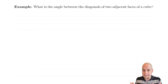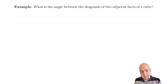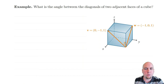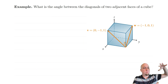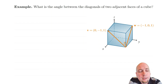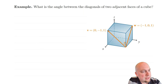Let's do another example in three dimensions. Let's find the angle between the two diagonals of two adjacent faces of a cube. We start by drawing a picture. I've oriented the cube so that the back corner is at the origin (0, 0, 0) and the front corner is at (1, 1, 1). The first diagonal vector I claim is (0, −1, 1), and the second is (−1, 0, 1). Let's see where those come from.